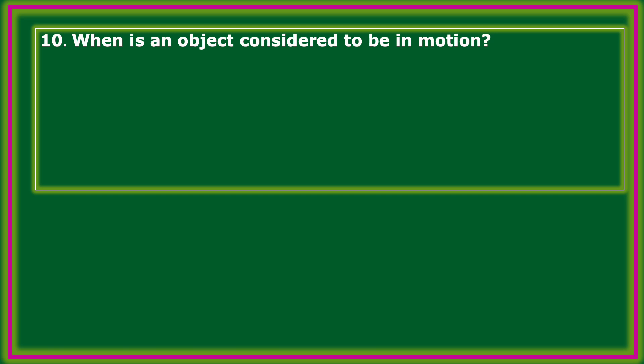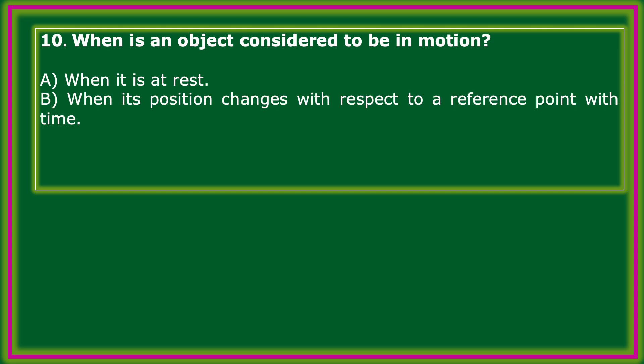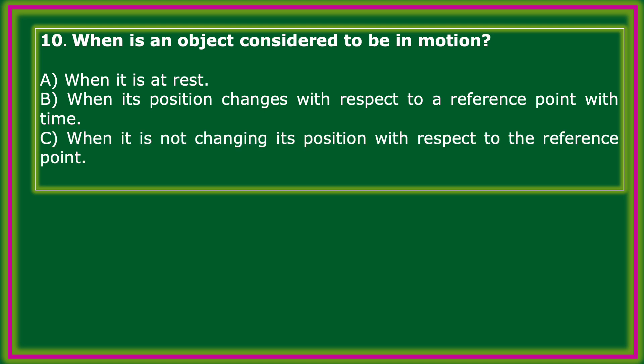When is an object considered to be in motion? Options: when it is at rest; when its position changes with respect to a reference point with time; when it is not changing its position; when the time remains constant. The correct answer: when its position changes with respect to a reference point with time.